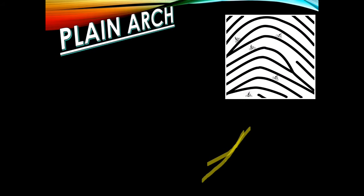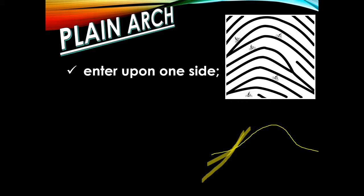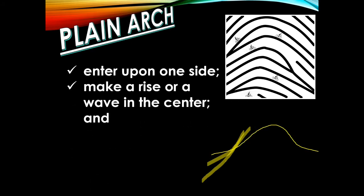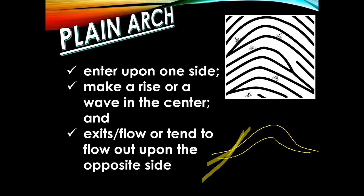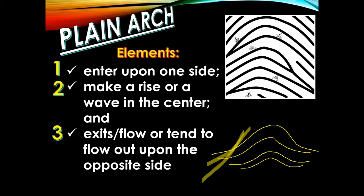Plain arches are ridges wherein they enter upon one side, then make a rise or wave in the center, and then exit or flow out upon the opposite side. These three movements are actually the elements of a plain arch.